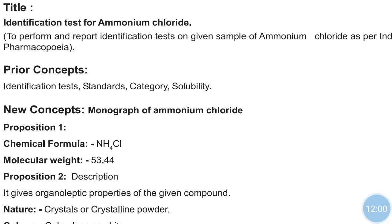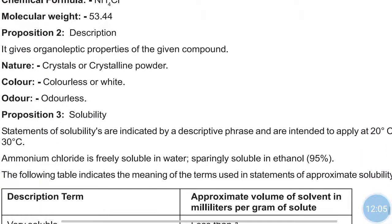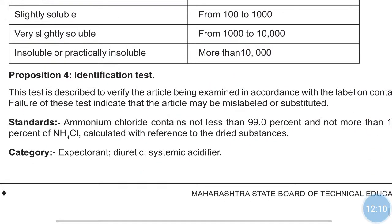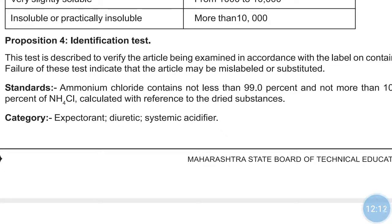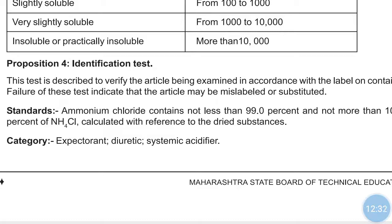Ammonium chloride has the chemical formula NH4Cl and molecular weight 53.44. Some organoleptic tests and descriptive terms are given for it. Its standards state it should contain not less than 99% and not more than 100% of NH4Cl, calculated with reference to the dried substance.